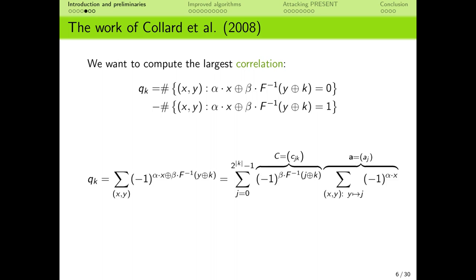This correlation can be rewritten as a sum of signs over the space of all the available plaintext-ciphertext pairs. The correlation can in turn be separated into two parts: one that doesn't depend on the data and can be precomputed, and the other that is independent of the key guess and can be obtained very quickly from the data. In other words, the vector of correlations for all the key guesses is the product of a matrix C, which only depends on the structure of the cipher, and a vector A, which is obtained from the data.